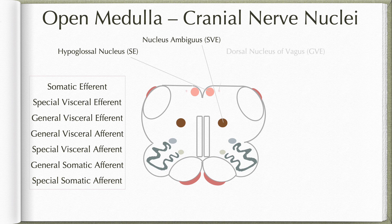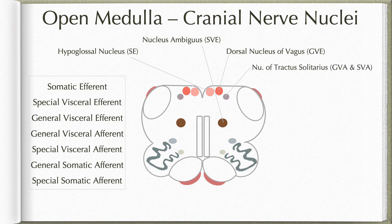The third column is the general visceral efferent column, represented by the dorsal nucleus of the vagus, which is located lateral to the hypoglossal nucleus on the posterior surface. This nucleus contributes to the vagal trigone in the floor of the fourth ventricle. The next nucleus is the nucleus of tractus solitarius, which is located slightly ventrolateral to the dorsal nucleus of the vagus, so it does not form any impression on the surface. This represents both the general visceral afferent column and the special visceral afferent column.